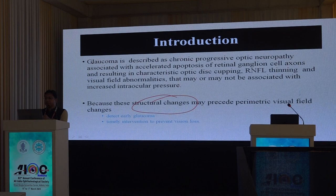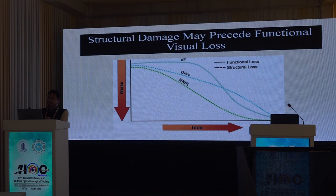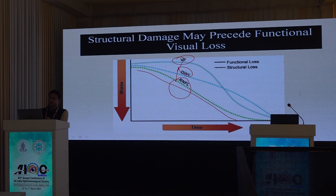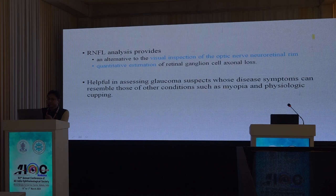In recent decades we have tools that can detect damage before actual perimetric changes occur — pre-perimetric detection. Structural changes occur much earlier than functional changes; early RNFL changes are seen before disc changes, which precede visual field changes. If we can detect this permanent blinding disorder at an early stage, we can treat it better.